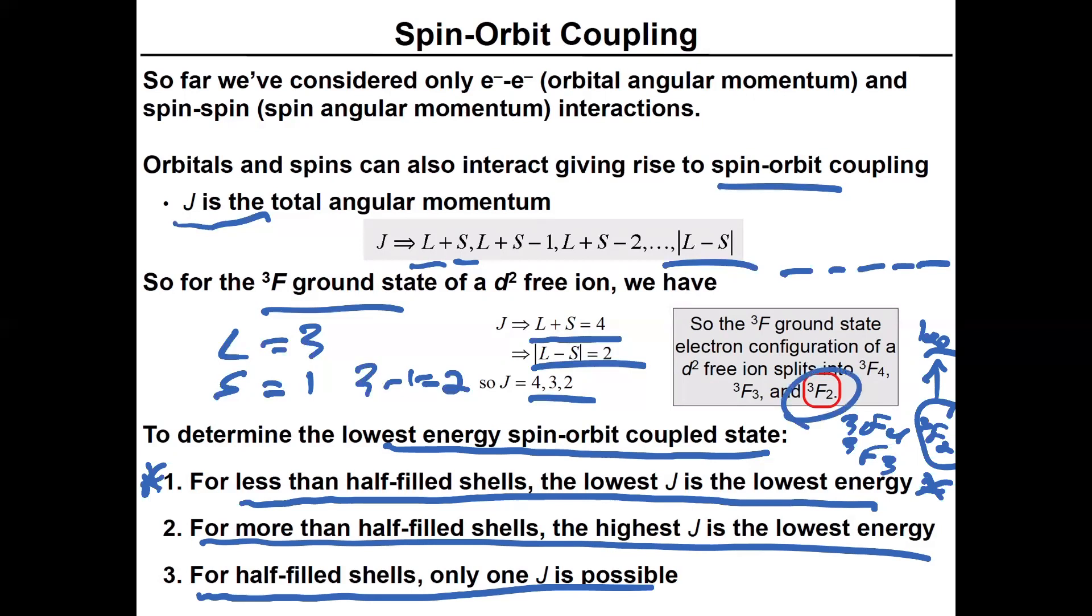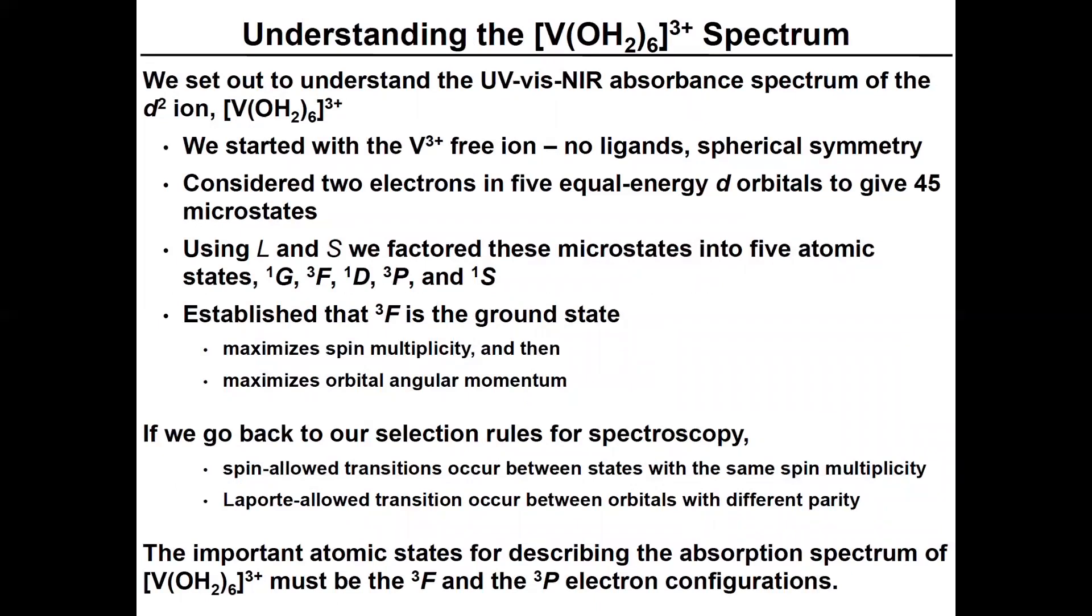Let's think about what this all means to us. When we started out, we're trying to understand why there's multiple absorption bands in the visible portion of the spectrum for the hexa-aqua-vanadium-3-plus cation. We started with this free ion, so there's no ligand spherical symmetry. If the two electrons are in five equal energy D-orbitals, you got 45 microstates that then break out into five different spectroscopic terms. And we know that the triplet F term is the ground term. That's because this one maximized spin multiplicity and maximized orbital angular momentum. And if we consider spin-orbit coupling, the triplet F2 is now the ground state.